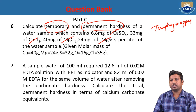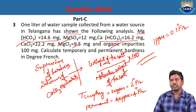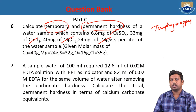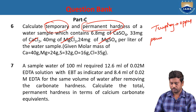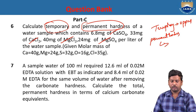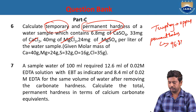Each salt is converted to calcium carbonate equivalence using: (weight of salt / molecular weight of salt) × 100. Finally, permanent hardness = 96.82 ppm.